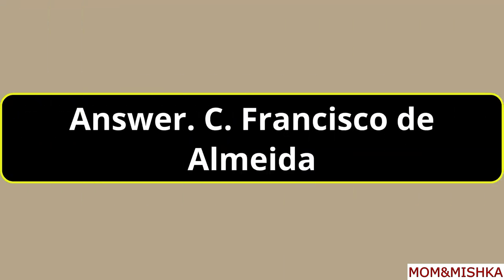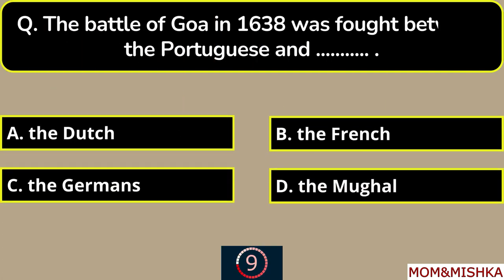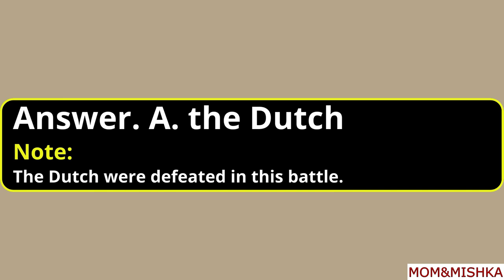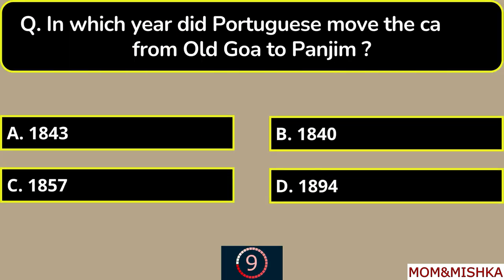The Battle of Goa in 1638 was fought between the Portuguese and blank — between Portuguese and Dutch, option A, and the Dutch were defeated in this battle. In which year did the Portuguese move the capital from Old Goa to Panjim?